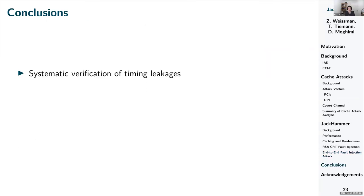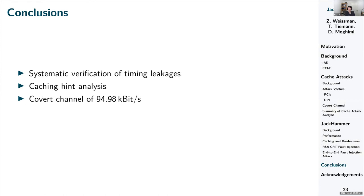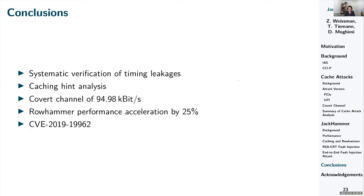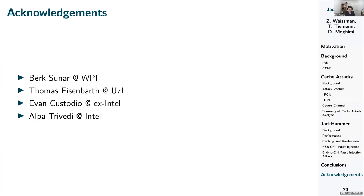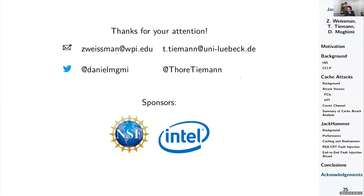In summary: we identified and verified timing leakages in the Arria 10 platform, analyzed caching hint behavior, and constructed a covert channel from FPGA to CPU reaching 94.98 kilobits per second. We showed FPGAs accelerate rowhammer performance by at least 25%, and demonstrated a fault injection attack against the RSA-CRT implementation in wolfSSL, resulting in a CVE. We thank our advisors Berk Sunar and Thomas Eisenbarth, as well as Evan Custodio and Uday Trivedi from Intel for their support. Please read our paper for more details.